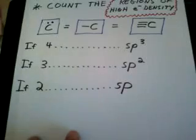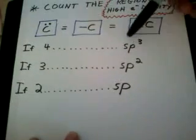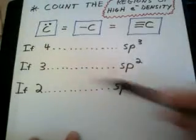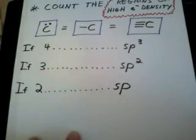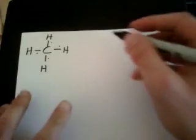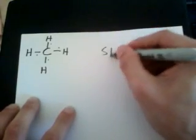If there are four regions of high electron density around the atom, then that atom is SP cubed hybridized. If there are three, it's SP squared hybridized. And if there are two, it is SP hybridized. For example, here we have methane, CH₄. Count the regions of high electron density around the carbon: one, two, three, four. Four regions means this carbon atom is SP cubed hybridized. Pretty easy.